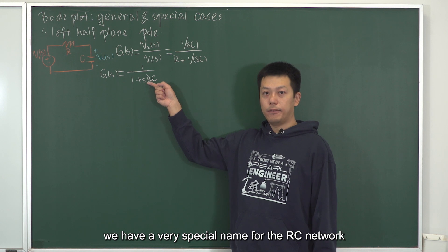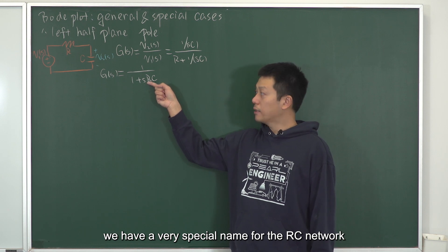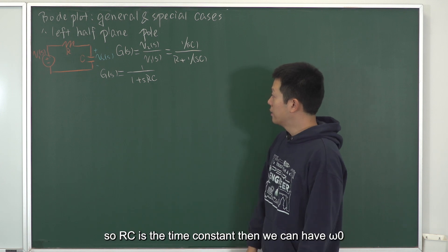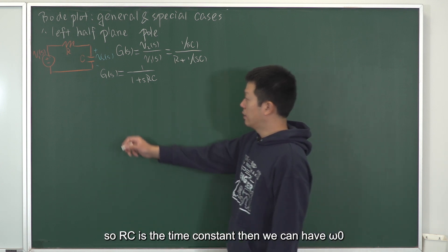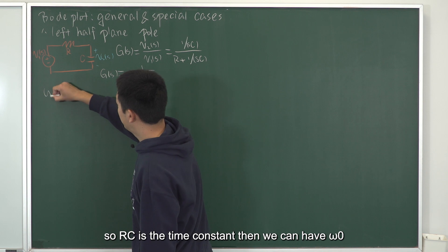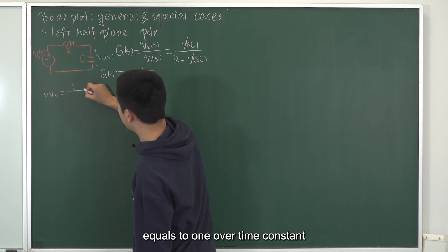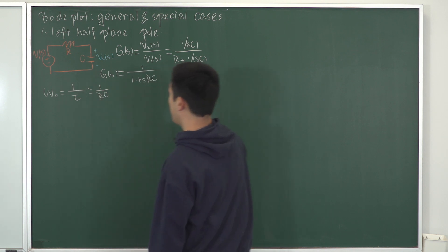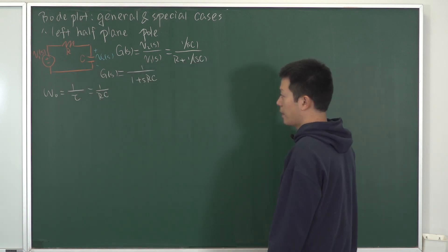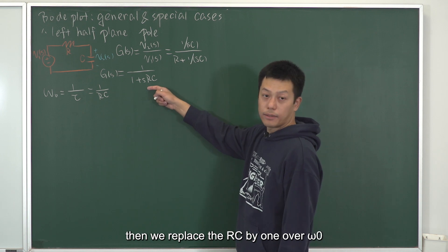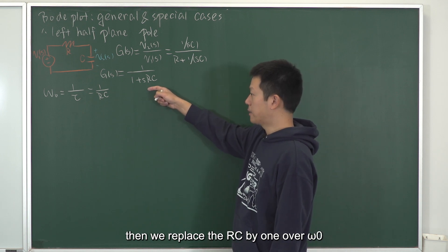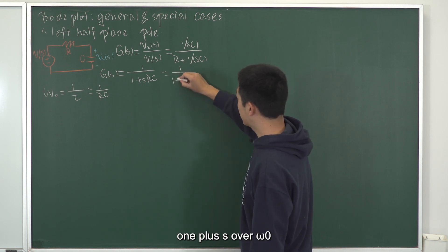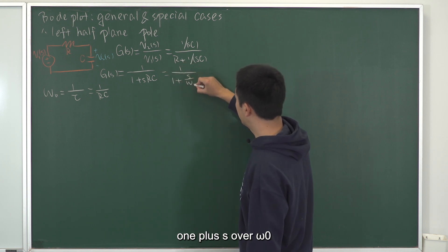For the RC network, RC has a special name — we call it the time constant. So RC is the time constant. Then we define omega_0 equals 1 over the time constant, which is 1 over RC. Replacing RC by 1 over omega_0, the transfer function becomes G(s) equals 1 over (1 plus S over omega_0).